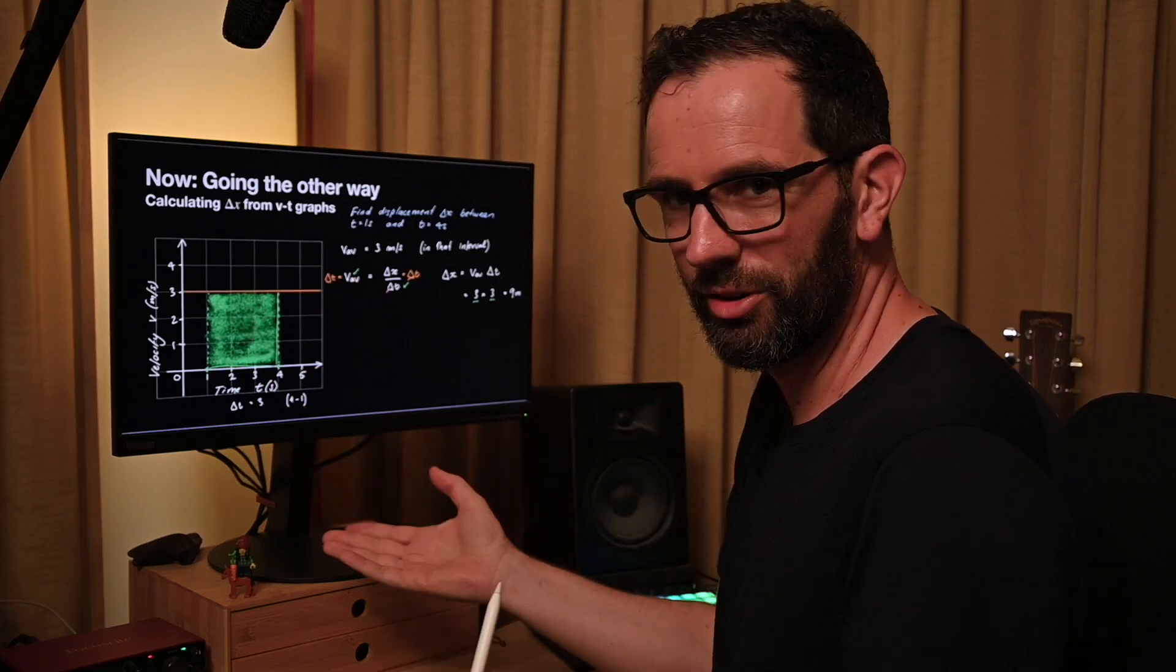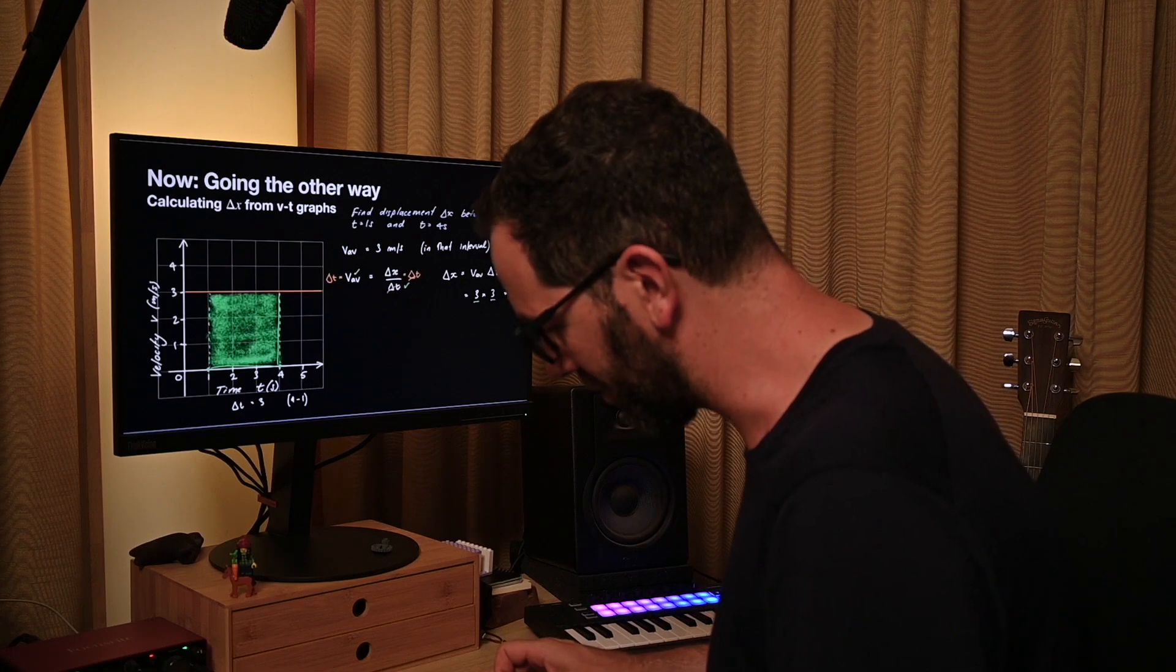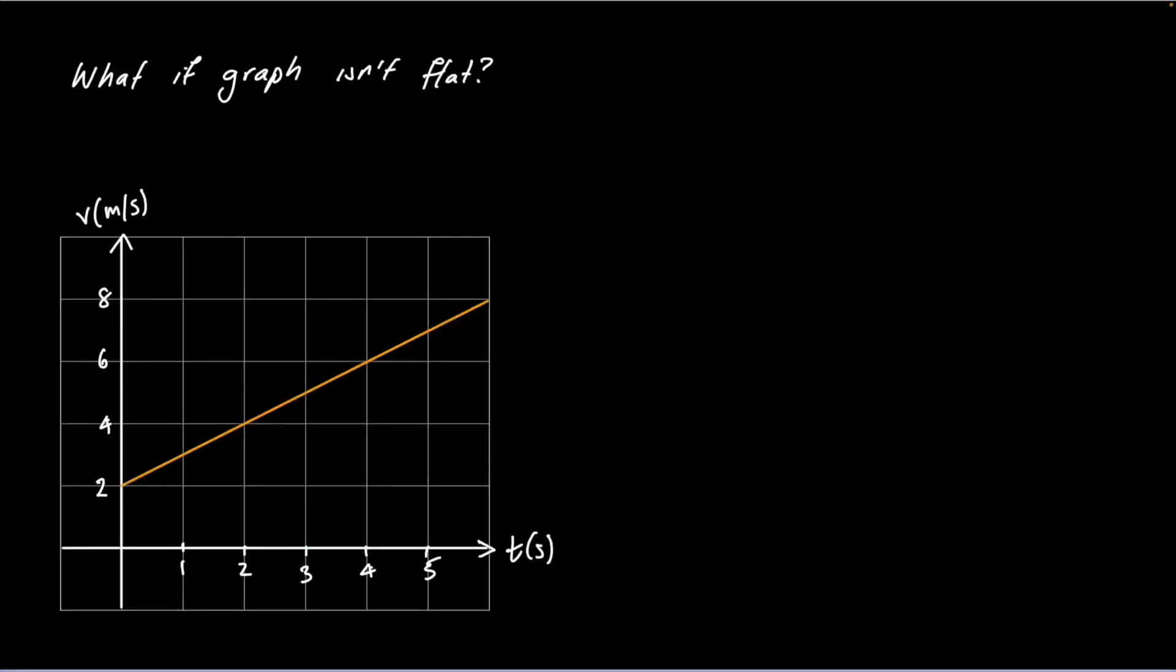Can we be more general? Let's look at a slightly more involved example where our velocity is changing. Now we've got an example where our graph is not flat, our velocity is going up from two up to eight. Let's try and find the displacement between zero and five seconds.